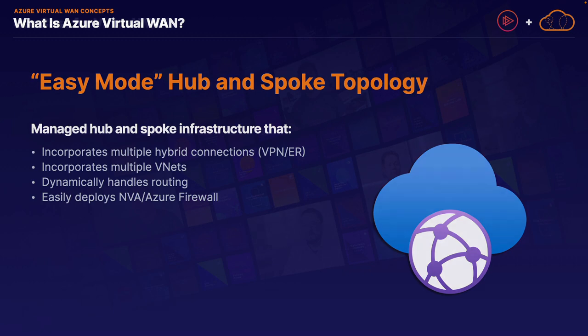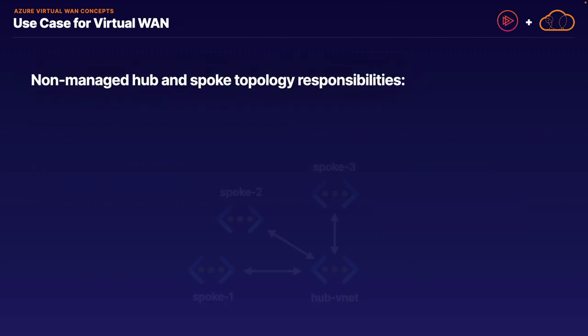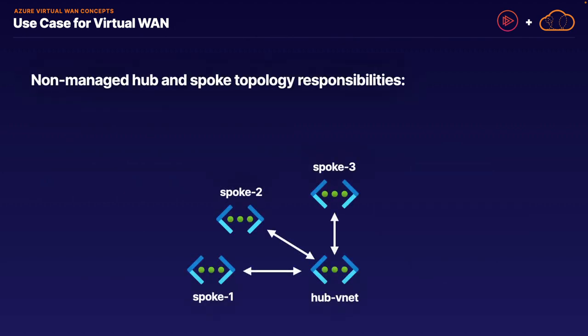Let's think of a typical scenario in which Virtual WAN would be a good option, especially when compared to creating your own non-managed hub-and-spoke topology, perhaps by pairing together different virtual networks. Technically, you do not have to use the Virtual WAN service for anything, especially when working with hybrid connections, because you can put this together yourself. However, there are some things that Virtual WAN handles, or at least makes a lot easier for you.